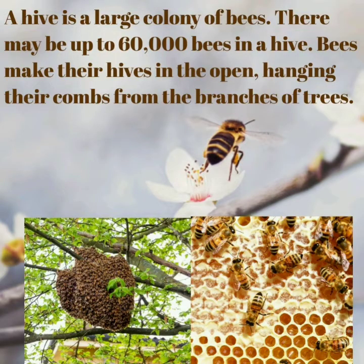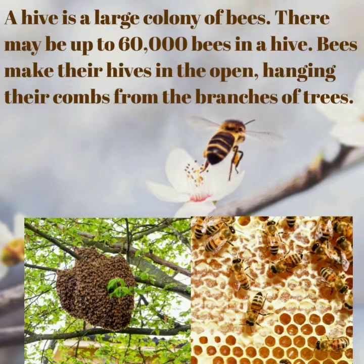Page number 9. A hive is a large colony of bees. There may be up to 60,000 bees in a hive. Bees make their hives in the open, hanging their combs from the branches of trees. A group of bees is called a colony of bees. There can be up to 60,000 bees, which is a large number. The bees make their hives in the open, hanging their combs from the branches of trees. What do you mean by combs? Can you see in the second picture — a group of wax cells which has six sides. Honeybees make these to hold their honey and their eggs.